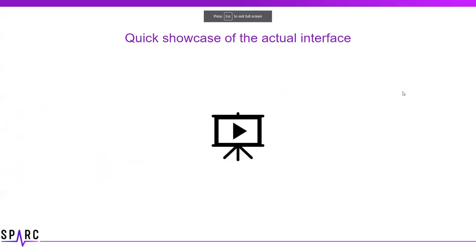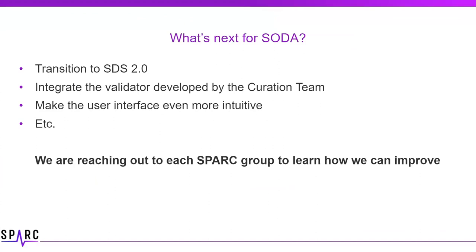What we are planning to do next: we have several items in the pipeline to make it even easier and more convenient to comply with SPARC standards. The first thing we are doing is transitioning to SDS 2.0 — we've already started, so when it is imposed, we will be ready. We're also planning to integrate the validator developed by the curation team into SODA, which is very exciting because it will allow you to validate your dataset before you submit, detect any errors, and address them proactively. We are currently reaching out to each SPARC group individually so we can do a live demo and learn how we can improve further.